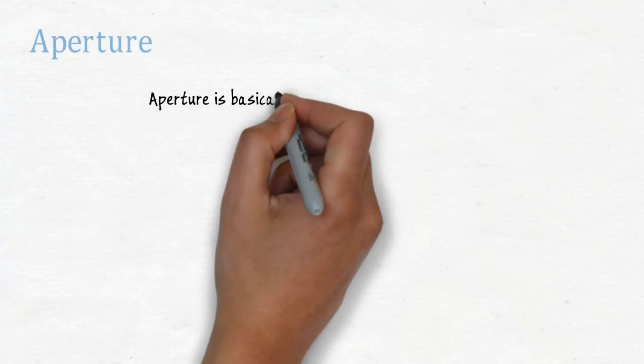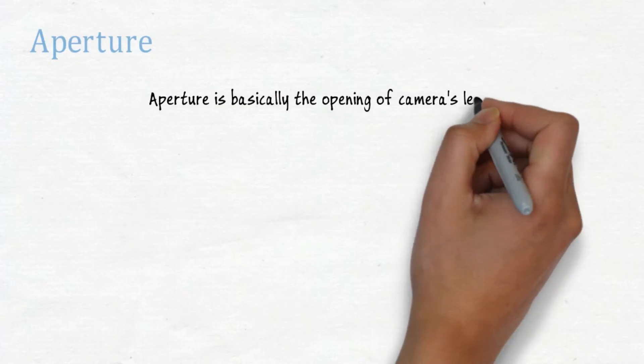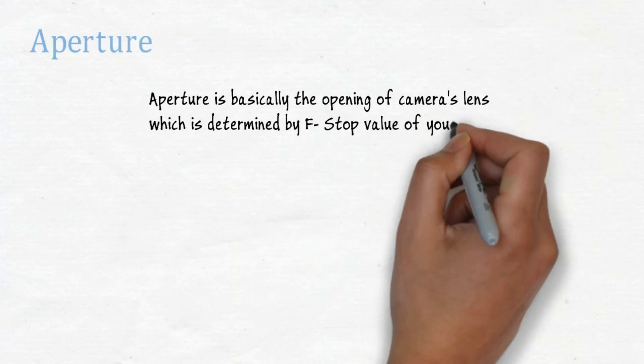Aperture is basically the opening of camera's lens, which is determined by the f-stop value of your camera.